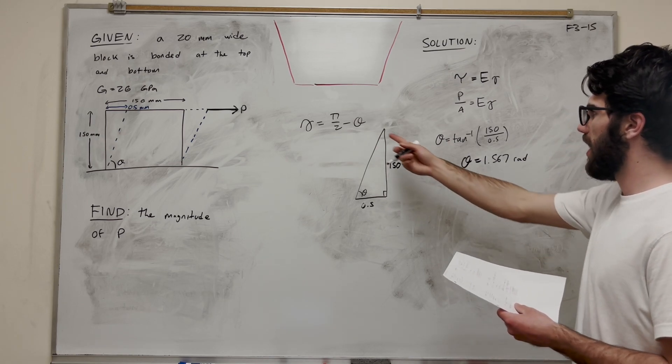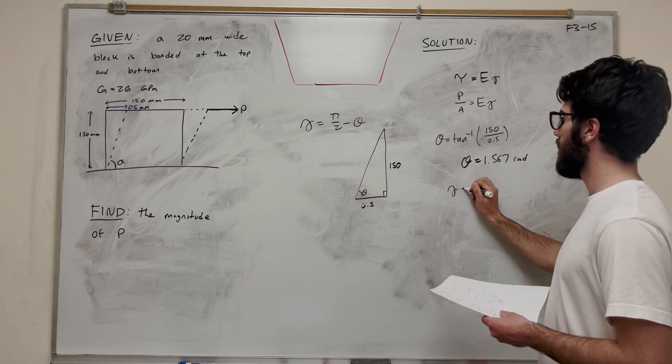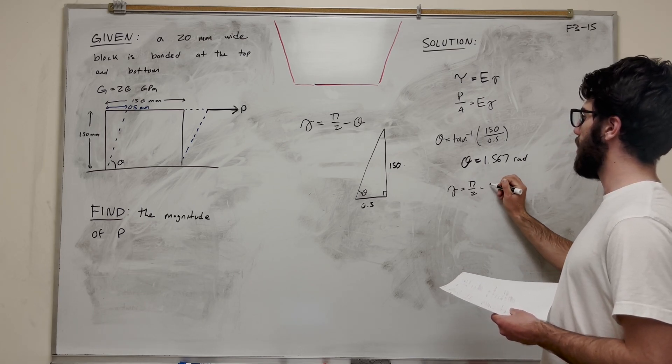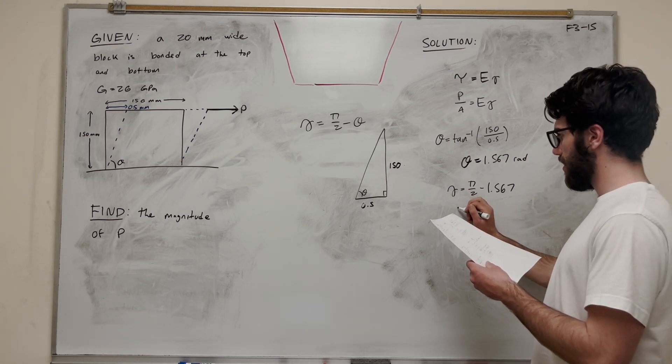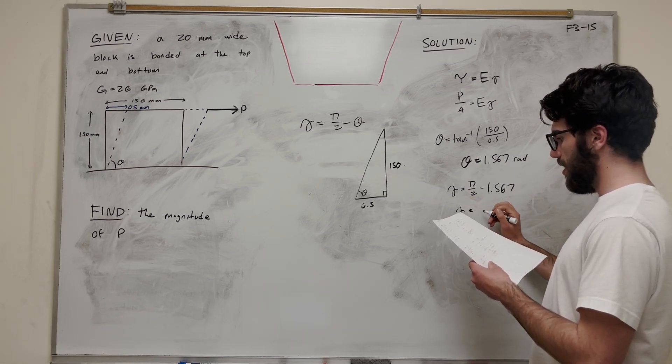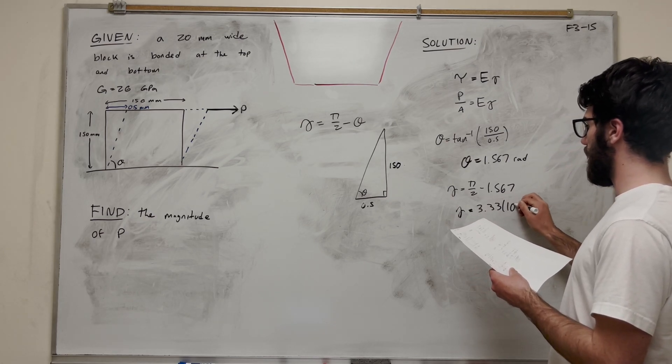This theta we're going to find is 1.567 radians. So if you want to find our shear strain, we're going to take pi over two minus 1.567, and we're going to find that this number is 3.33 times 10 to the negative 3 radians.